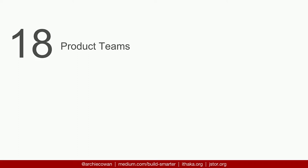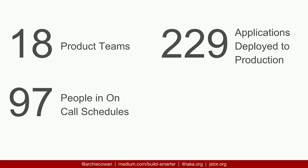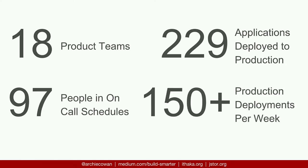As far as how we work, we're very much an agile shop. We have 18 product teams right now. A few years ago we only had maybe three or four people on an on-call rotation; now there are 97 — that was a big cultural shift. There used to be maybe one application deployed to production; now we have 229. And we deploy 150 to 200 times a week.